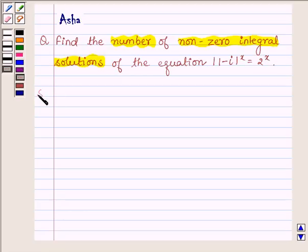So let us begin with the solution. We have to find the number of integral solutions of |1 - i|^x = 2^x.